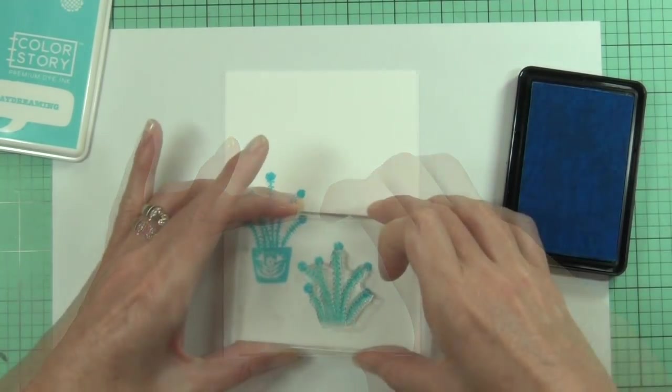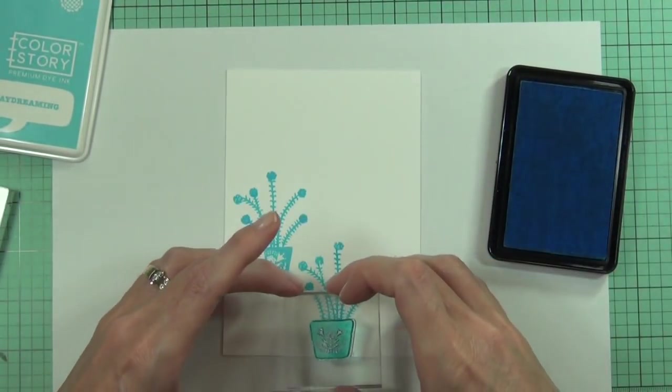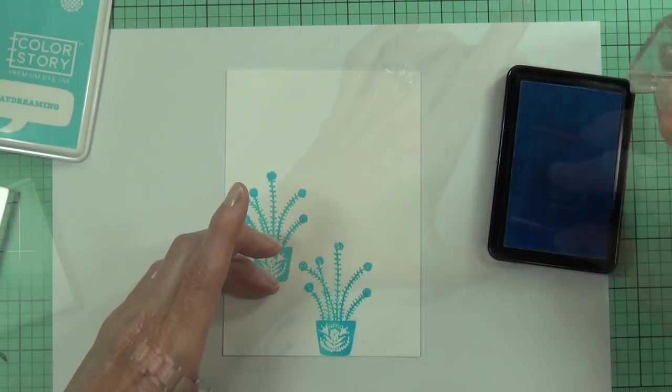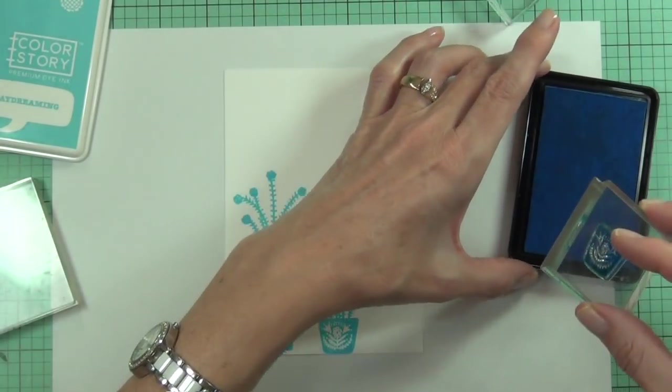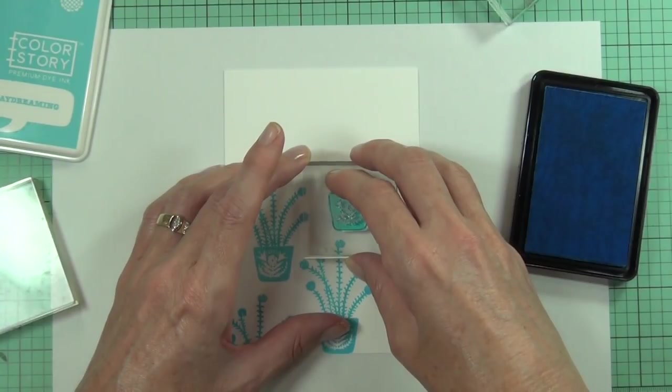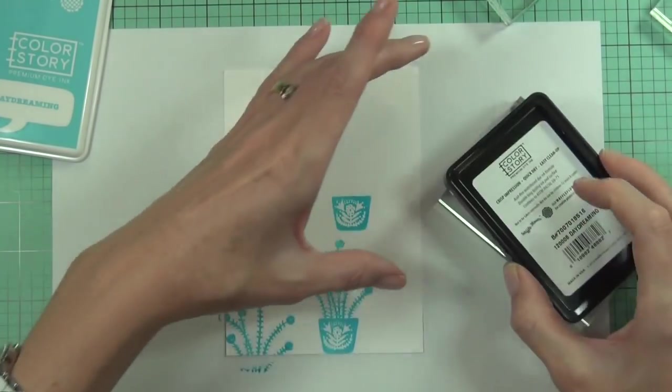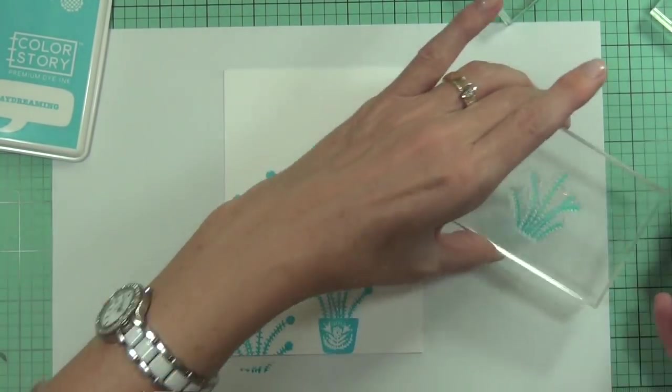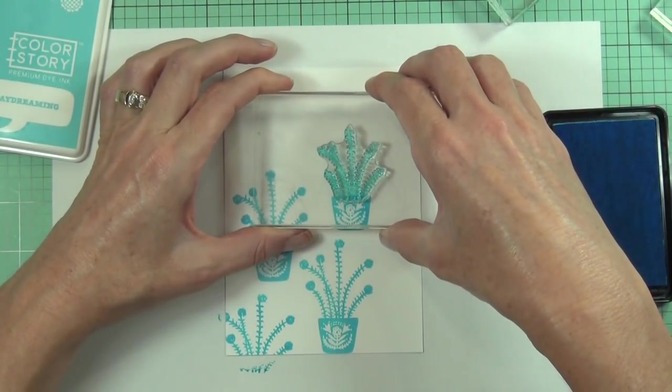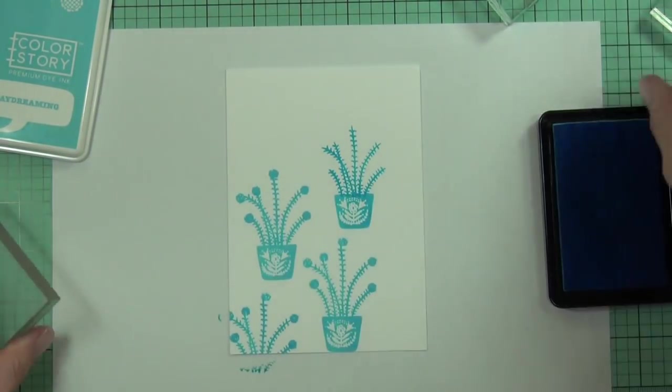So I've chosen one of the images and I'm stamping it repeatedly over a panel that's cut the same size as my card front, and I'm using the Daydreaming ink, which is a really pretty blue. When I'm stamping out a whole panel like this, what I like to do is start with my main image. I built one image up and then started stamping the top of the image first and working down. But as I'm building up the card, I start with the base image—so the pot, then the leaves, and then the flowers—and that way I know my spacing is going to work.